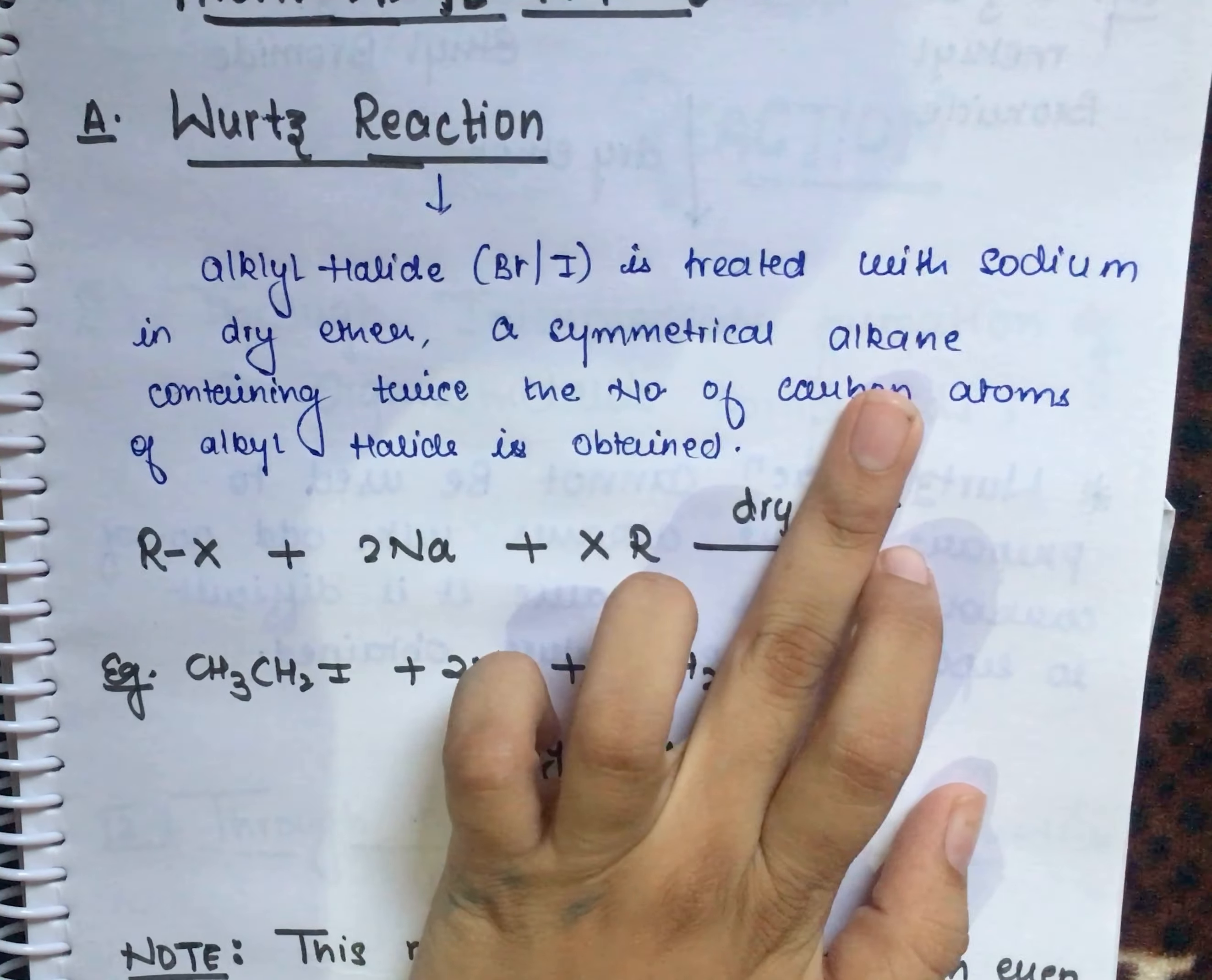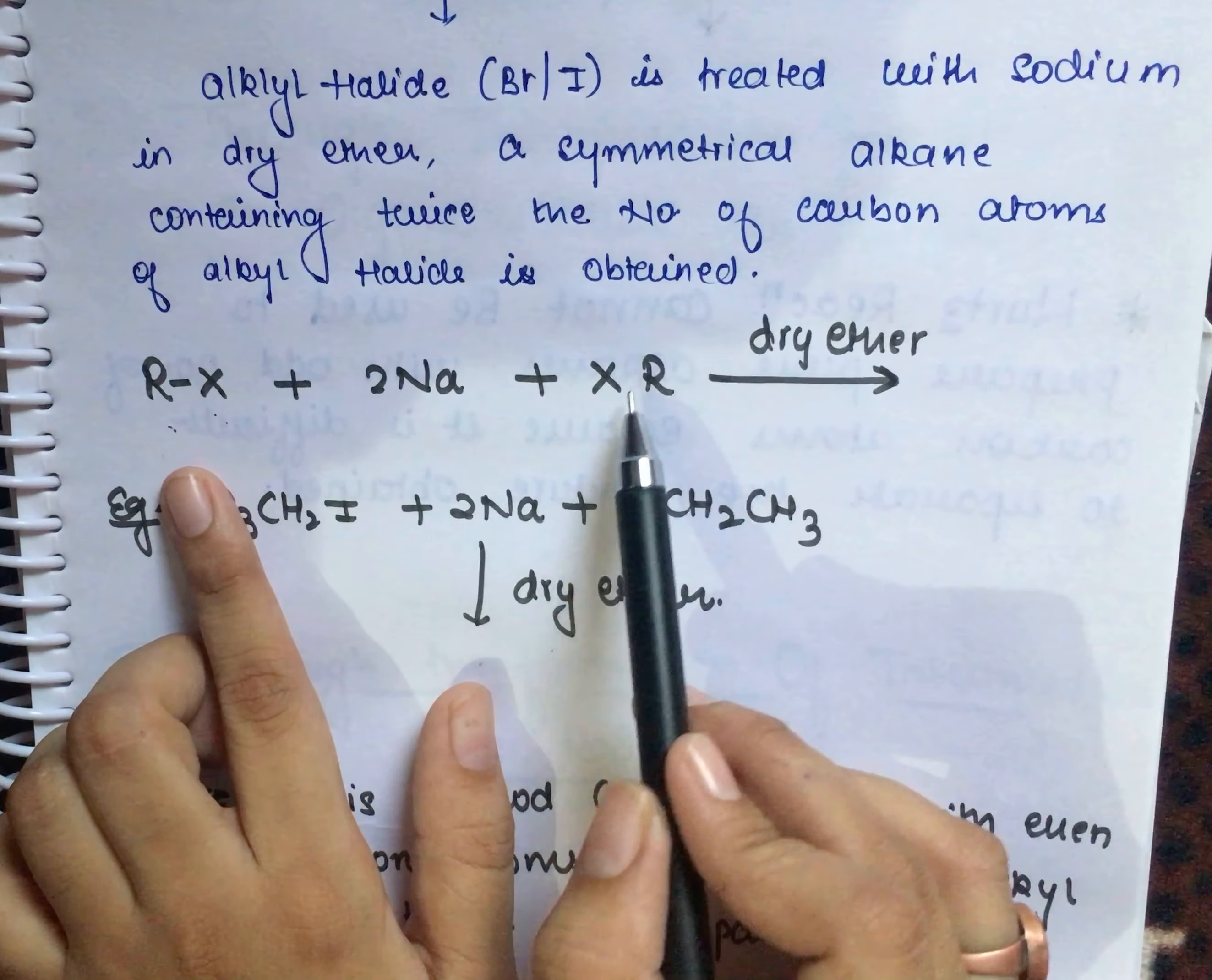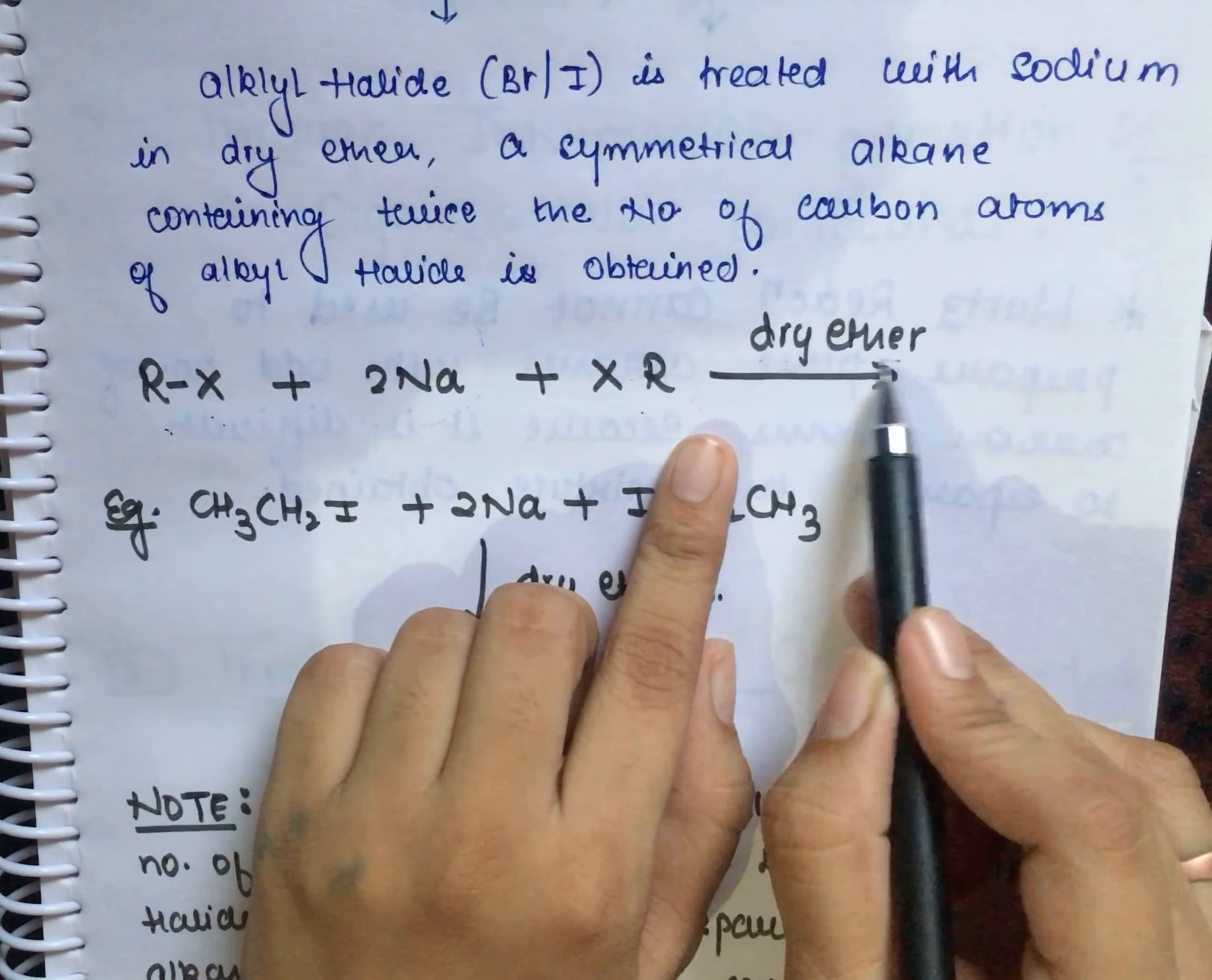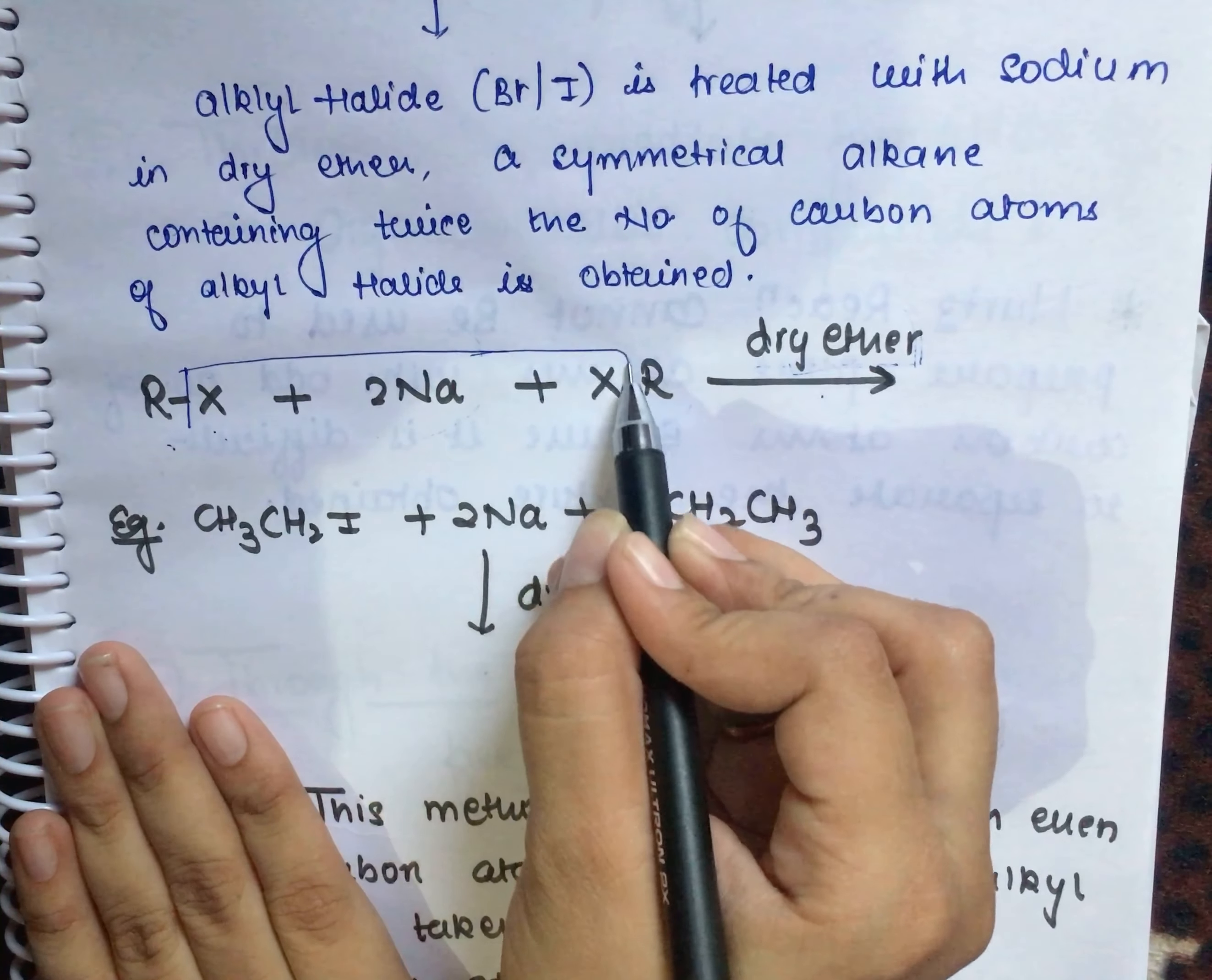So what did we get here? When we react alkyl halide with sodium in the presence of dry ether, two moles of NaX will come out.